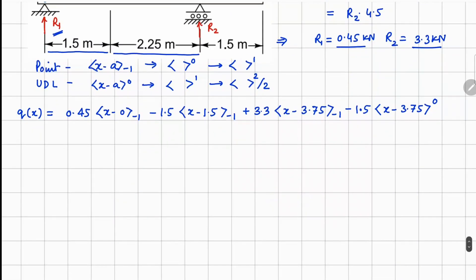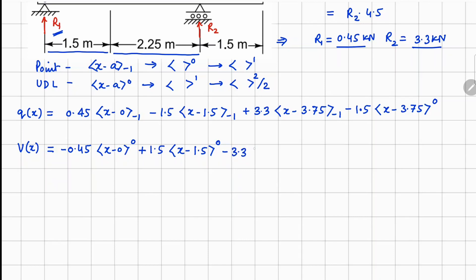In the next step we integrate Q(x) with a negative sign to get the shear force. We get: −0.45⟨x − 0⟩⁰ + 1.5⟨x − 1.5⟩⁰ − 3.3⟨x − 3.75⟩⁰ + 1.5⟨x − 3.75⟩¹.